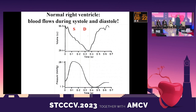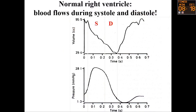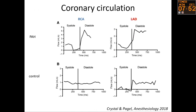Cette diapositive est importante. Le sang du ventricule gauche va vers l'aorte uniquement en systole. Le ventricule droit, c'est différent : le sang coule du ventricule droit vers l'artère pulmonaire quasiment pendant tout le cycle cardiaque, y compris en diastole. À retenir pour les jeunes : le ventricule gauche est perfusé coronairement uniquement en diastole, tandis que le ventricule droit est perfusé en systole et en diastole. Chez les malades ayant une hypertension artérielle pulmonaire, le ventricule droit n'est perfusé que pendant la diastole.